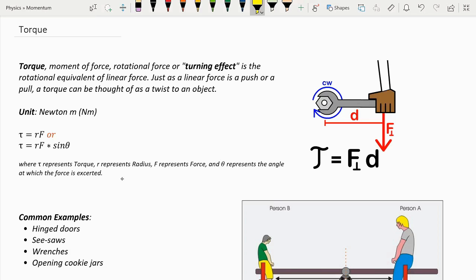So now let's go over torque. Torque, or the moment of force, or rotational force, or a turning effect, is the rotational equivalent of linear force. Just as linear force is a push or a pull, a torque can be thought of as a twist to an object.